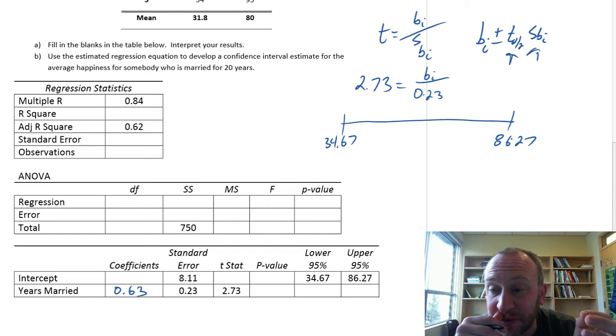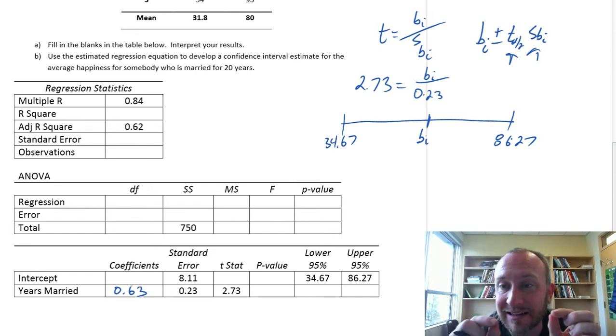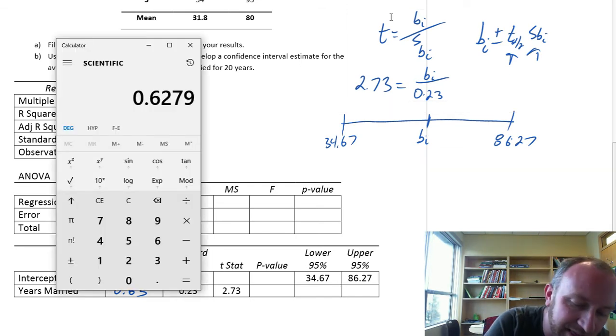We do know what this is, we do have that standard error, we can look up the critical value. But even easier still is that our coefficient is always going to be exactly in the middle of those two values of that confidence interval. So if we just find the middle...